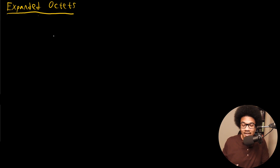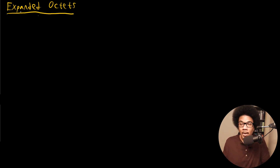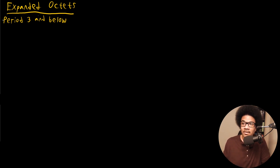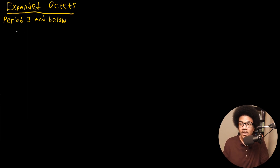Expanded octets are obviously the opposite of incomplete octets — these are atoms that are perfectly fine with having more than eight valence electrons around them. These usually occur on the periodic table from period three on down. Period three and below is where you start to see expanded octets as exceptions to the octet rule. The best example for this is SF6.